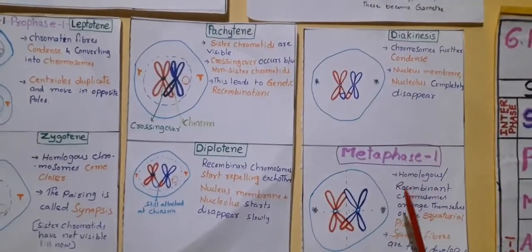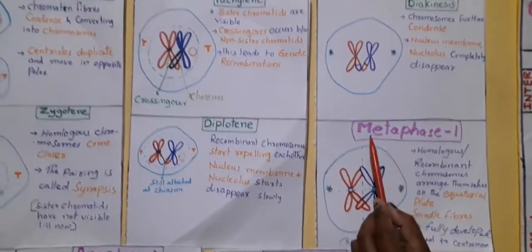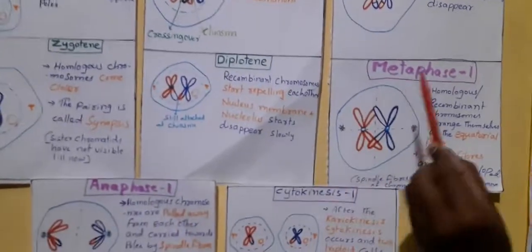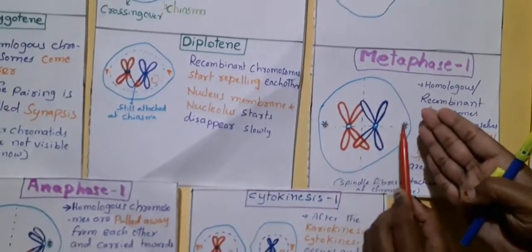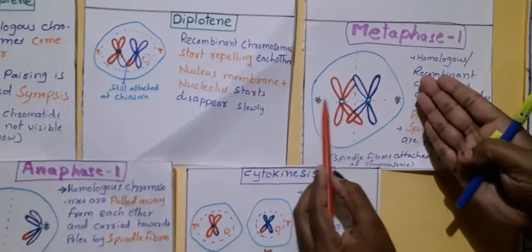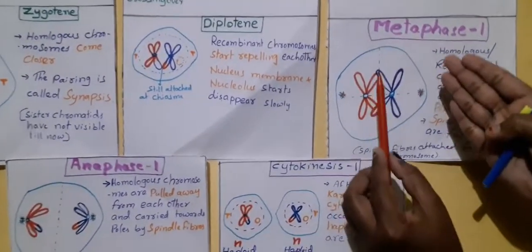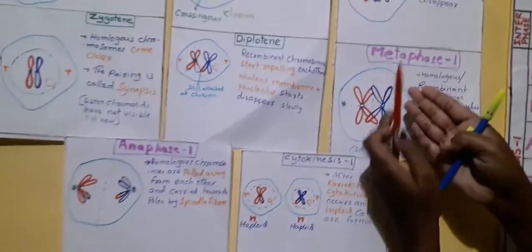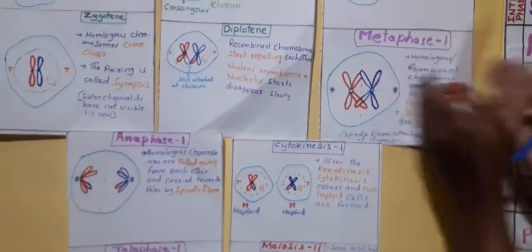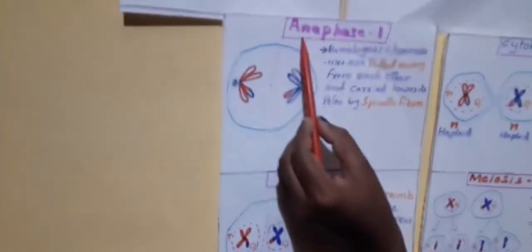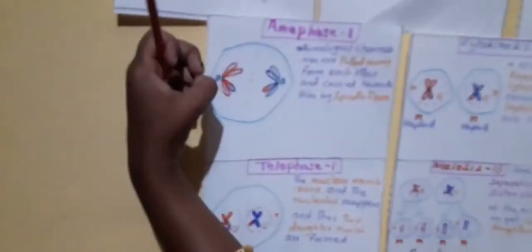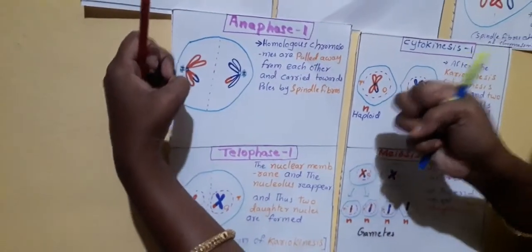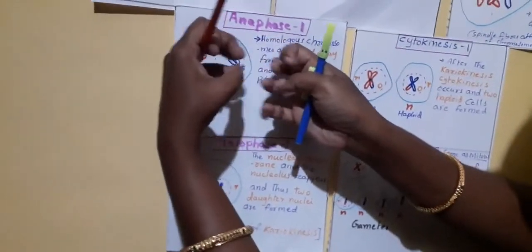The cell then goes into Metaphase I. Meta means middle. Homologous or recombinant chromosomes arrange themselves on the equatorial plate, and spindle fibers are fully developed and attach to the centromeres. Next, Anaphase I. Ana means opposite. After the metaphase stage, homologous chromosomes are pulled away from each other and carried towards the poles of the cell by spindle fibers.